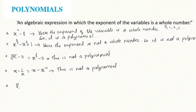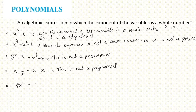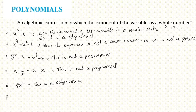Next example: the constant 8. Is 8 a polynomial? Yes — we can write it as 8 times x to the power 0, and 0 is a whole number. So 8 is a polynomial. It is called a constant polynomial.